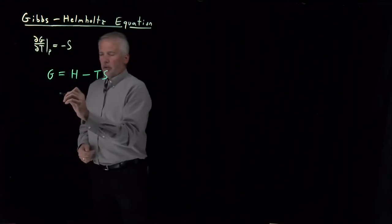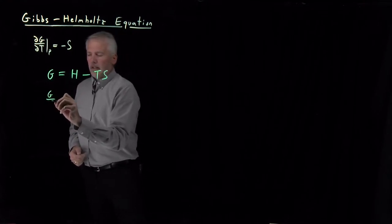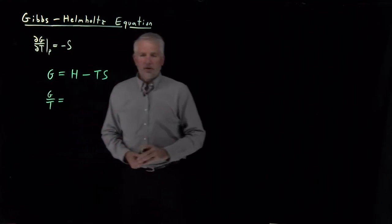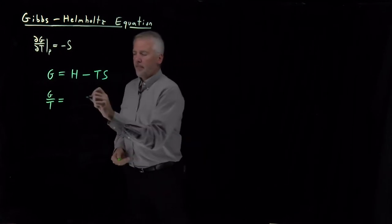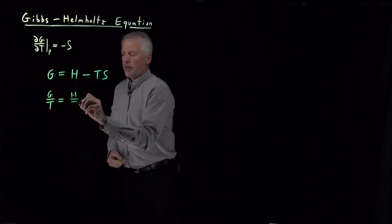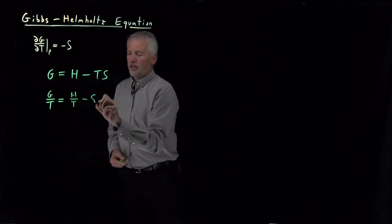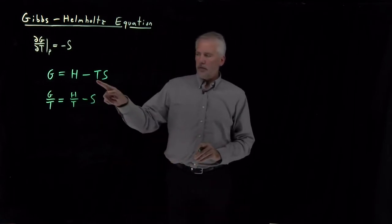What I'll do next is divide on the left and right side of this equation by temperature. So G divided by T is going to be equal to the enthalpy divided by T minus the entropy, where I've divided away this temperature.